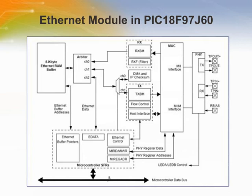An independent 8-kilobyte RAM buffer is used to store packets that have been received and packets that are to be transmitted. An arbiter controls access to the RAM buffer when requests are made from the microcontroller core, DMA, and transmit and receive blocks. The register interface functions as an interpreter of commands and internal status signals between the module and the microcontroller's special function registers.